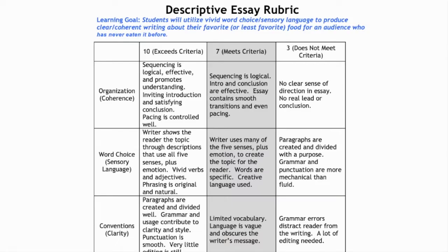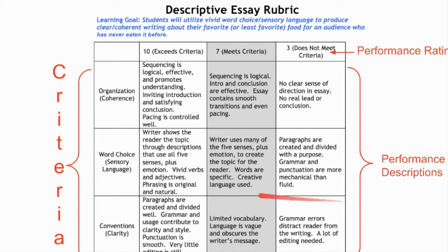One way that success criteria is often communicated to students is through a rubric. You can see there's a learning goal, and underneath it the success criteria is communicated. More specifically, we have criteria—the different knowledge or skill pieces based on the learning goal that we want our students to demonstrate mastery of. For example, we want our students' writing to convey word choice; the learning goal calls this sensory language. It's important that each of our criteria are aligned with our learning goal.